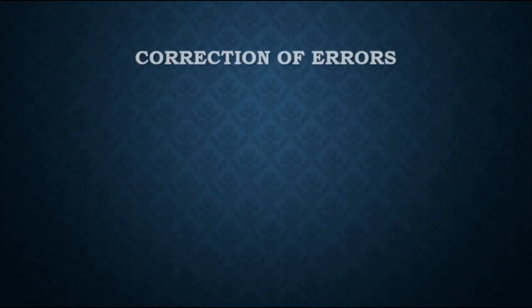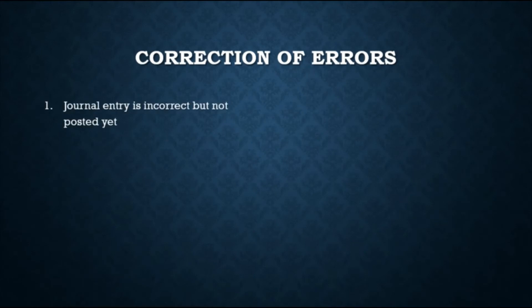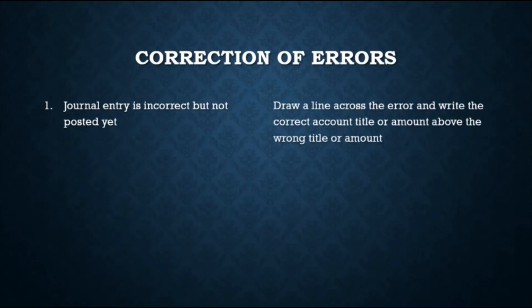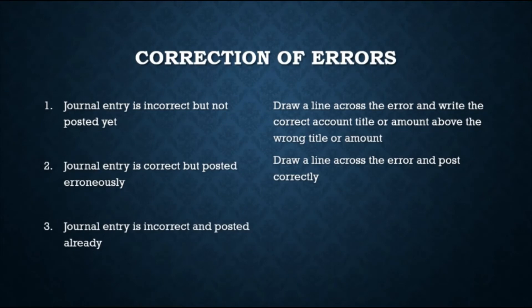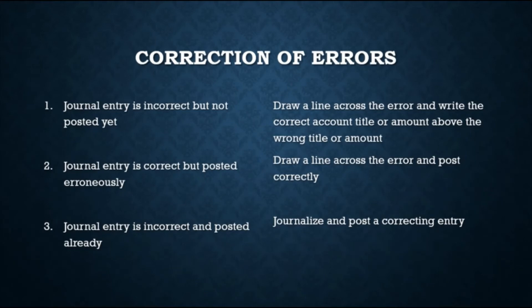Once the source of error is found, the correction procedure depends on the nature of the error and when it was discovered. If the journal entry is incorrect but not yet posted, draw a line across the error and write the correct account title or amount. If the journal entry is correct but was posted incorrectly, draw a line across the error and post it correctly. If the journal entry is incorrect and has already been posted, a correcting entry must be journalized and posted — erasures are not allowed as they may lead to suspicion of fraud.